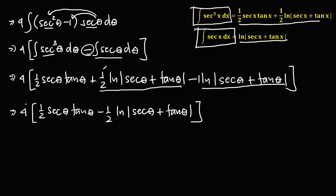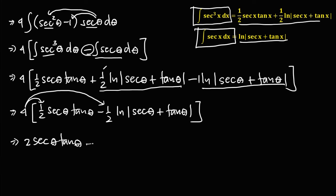Distributing the positive 4 to every term: 4 times one-half is 2, so we have 2 times secant theta tangent theta, minus 4 times one-half which is 2, times ln of the absolute value of secant theta plus tangent theta.